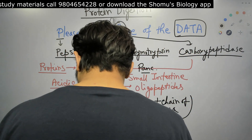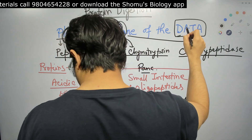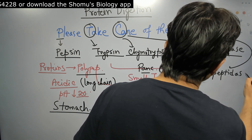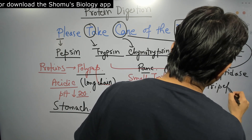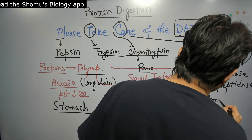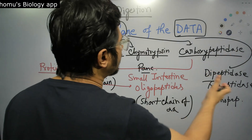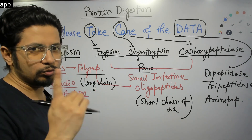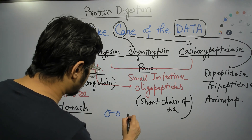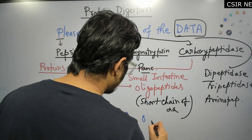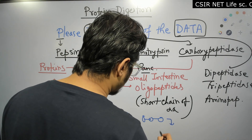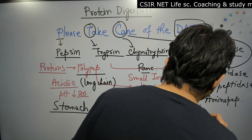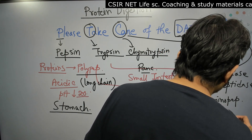Finally, 'Data' gives us D for Dipeptidase, A for Aminopeptidase, and T for Tripeptidase. Dipeptidase breaks dipeptides — two joined amino acids — into two individual amino acids. Tripeptidase breaks tripeptides into three individual amino acids. Together, they convert oligopeptides into individual amino acids.